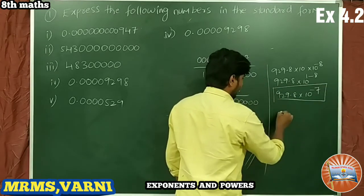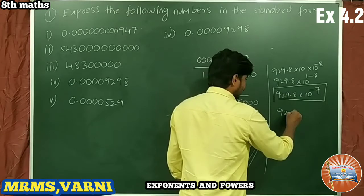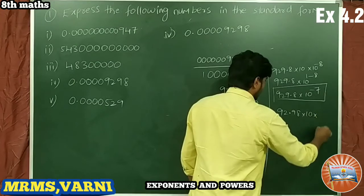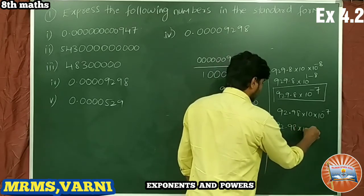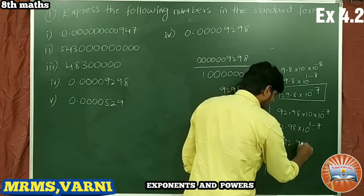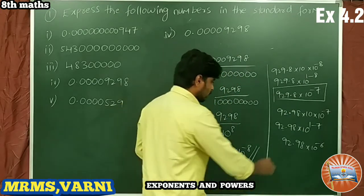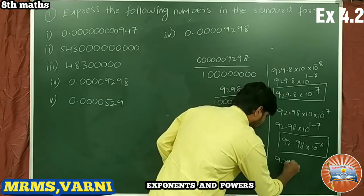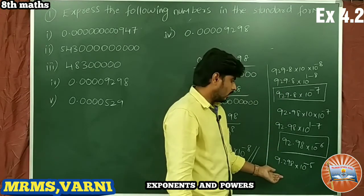Moving the decimal point forward: 92.98 × 10^(−6). Or 9.298 × 10^(−5) — I am writing this directly. Each time we move the decimal point forward, we reduce the magnitude of the negative exponent by 1.